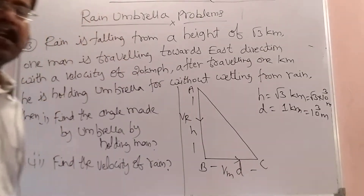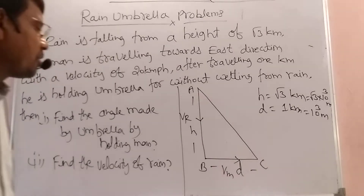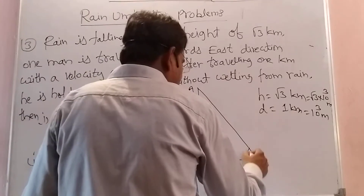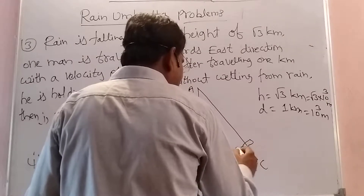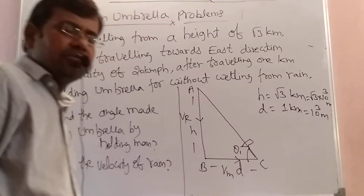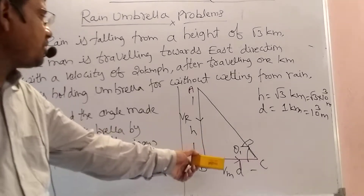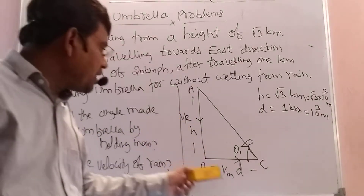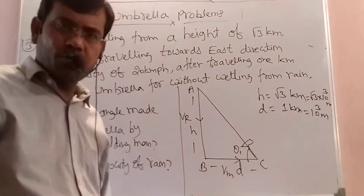Now, how much angle is made by the umbrella to avoid wetting? He is holding the umbrella — how much angle is made by the umbrella by the man to avoid wetting? Let this angle be theta 1. Now, tan theta 1 equals V_rain by V_man. Distance-based approach also works, so tan theta 1 equals H by D.